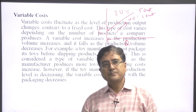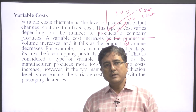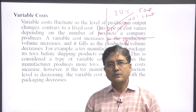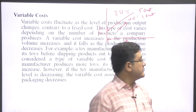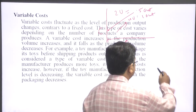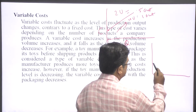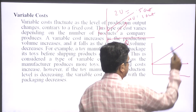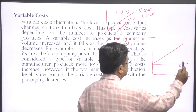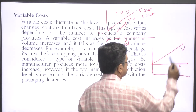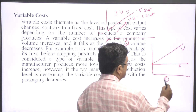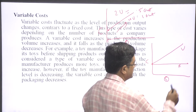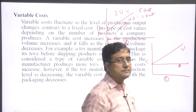Variable cost is contrasted with fixed cost. When discussing total cost, fixed cost remains constant while variable cost changes with quantity. These two together form the total cost structure.